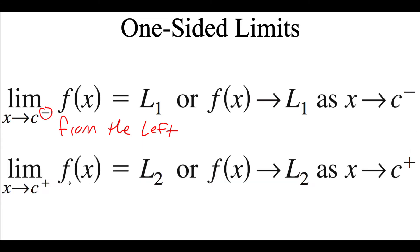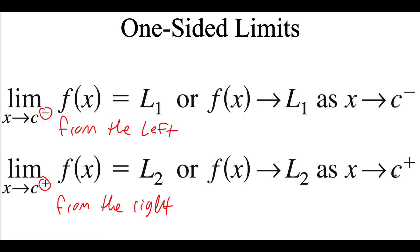But if we put a little plus on that c instead, that means we're approaching from the right-hand side. We can say that a function is approaching a specific limit value as x approaches this constant from the right-hand side because of that plus.